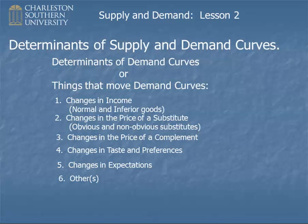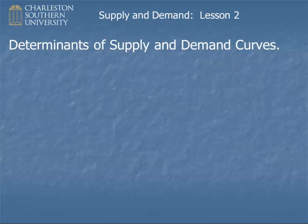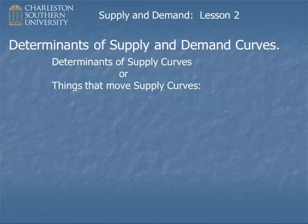Those are the determinants of demand curves. I've also listed 'Others' — just all the things I haven't put on my short list, like the number of people in a community or the weather if it's a product you use outdoors. The list is really quite unbounded. Now we have determinants of supply curves, or things that move the supply curve.